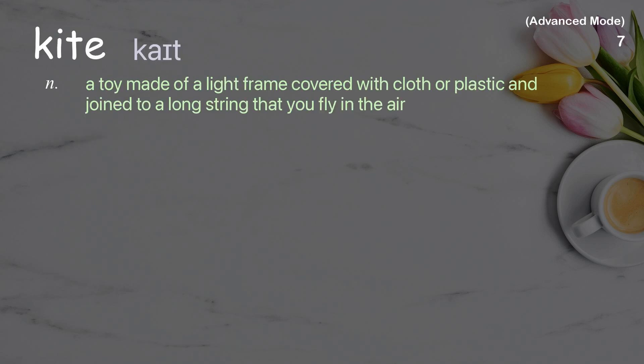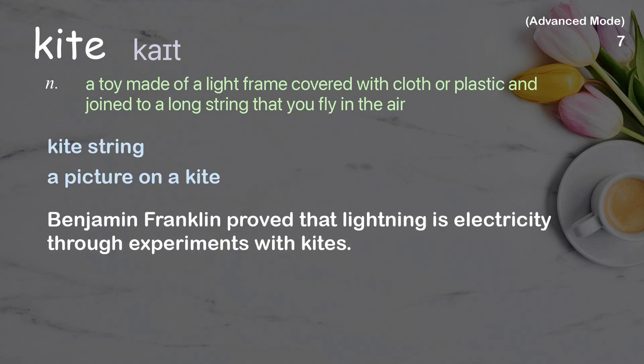Kite: a toy made of a light frame covered with cloth or plastic and joined to a long string that you fly in the air. Examples: kite string, a picture on a kite. Benjamin Franklin proved that lightning is electricity through experiments with kites.